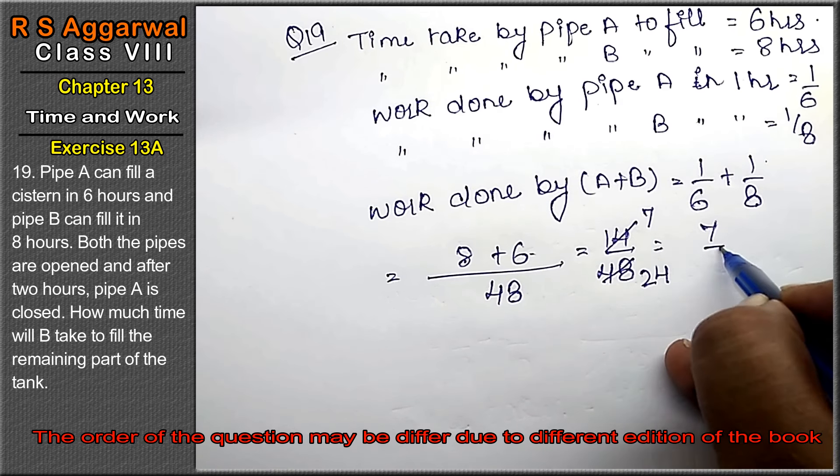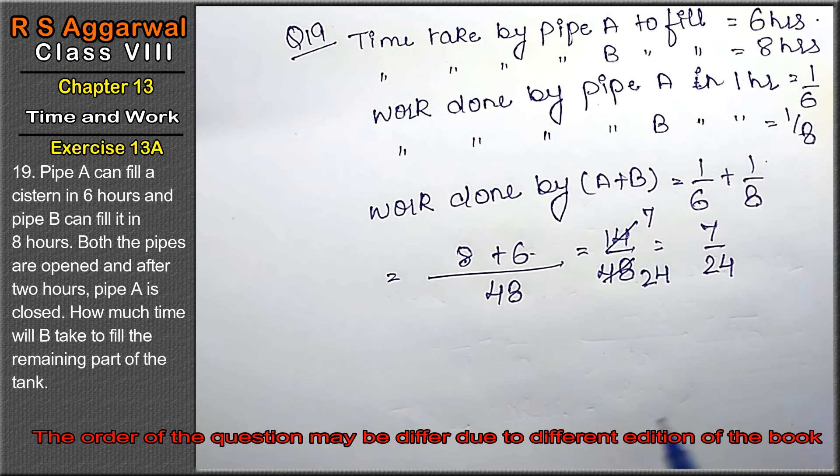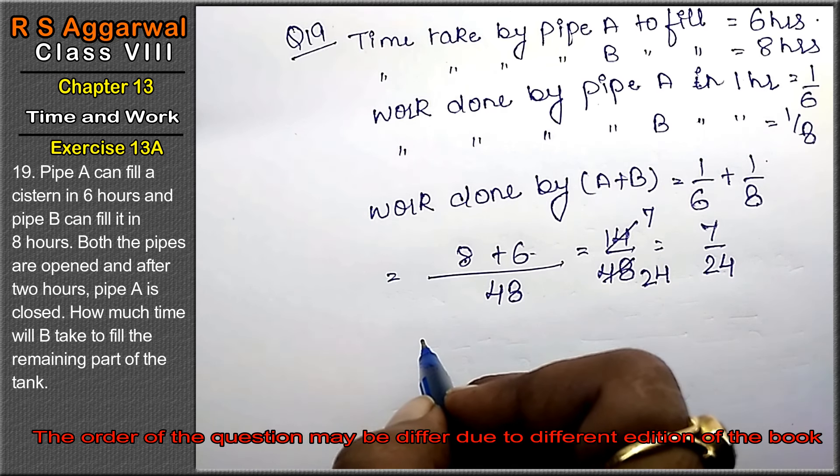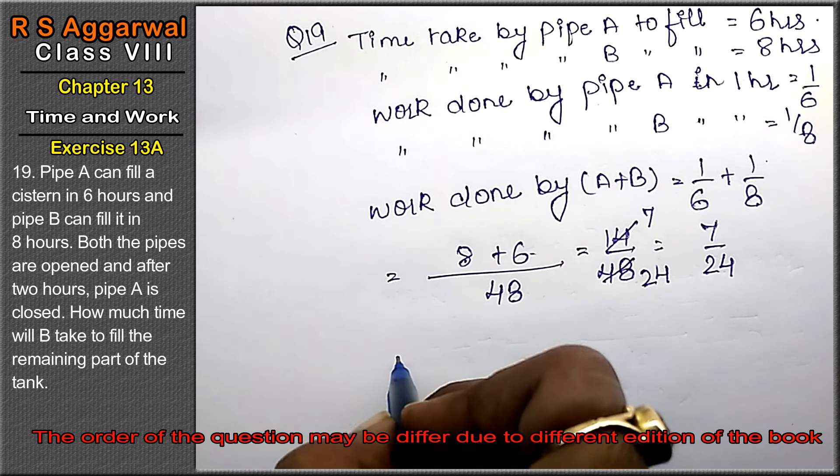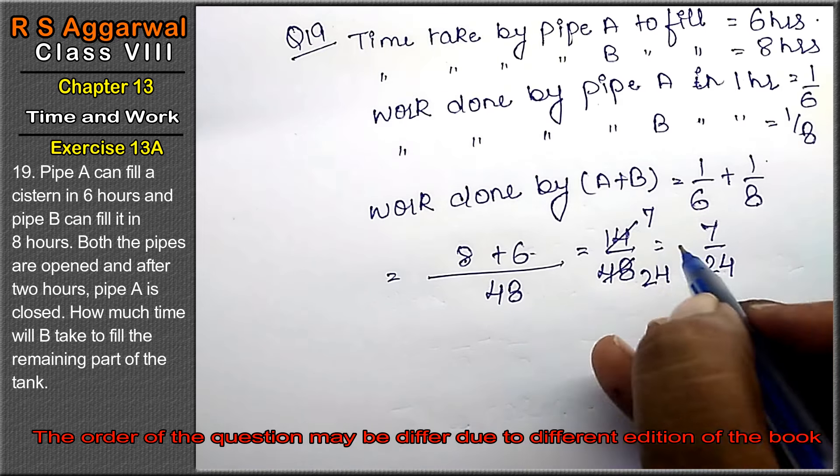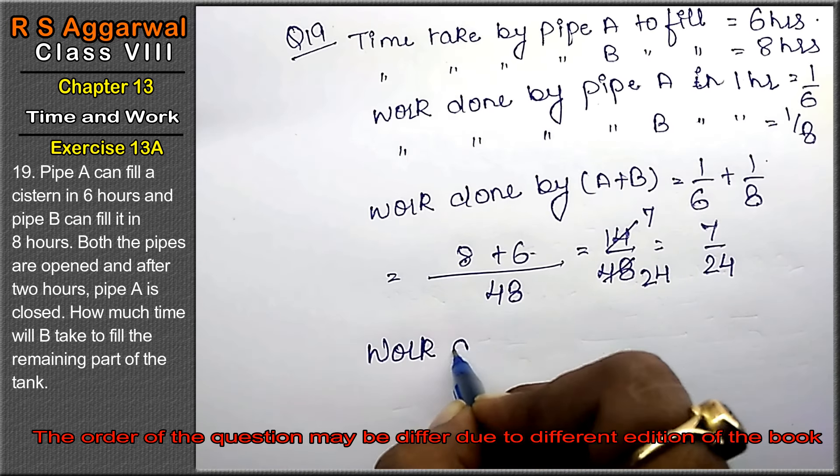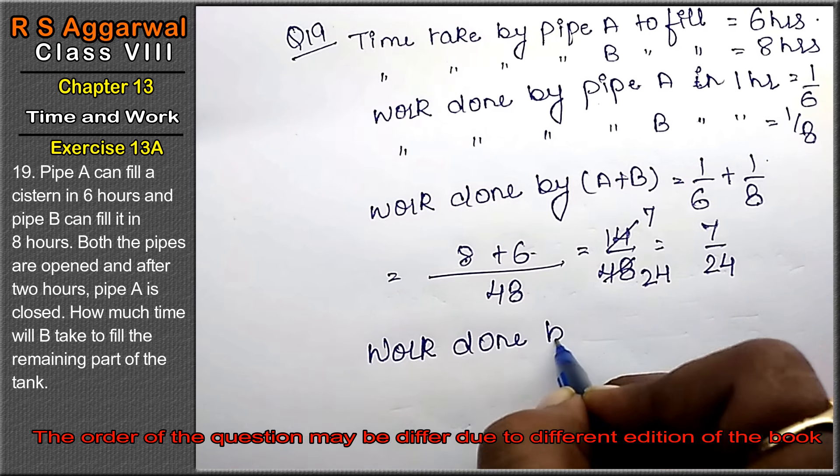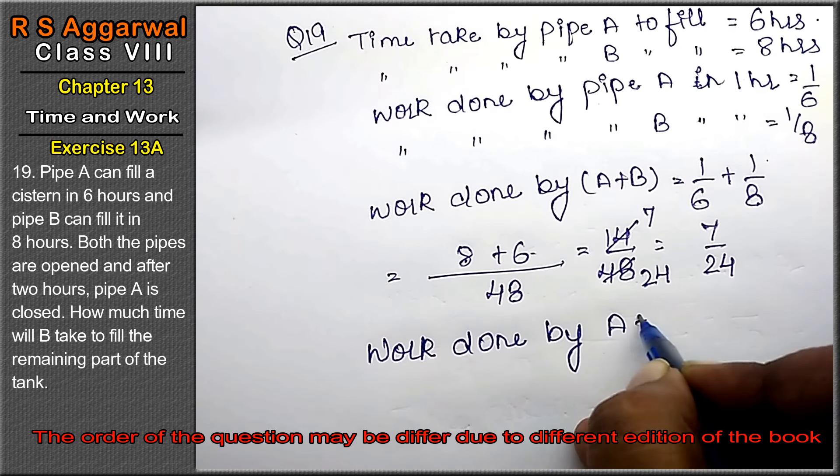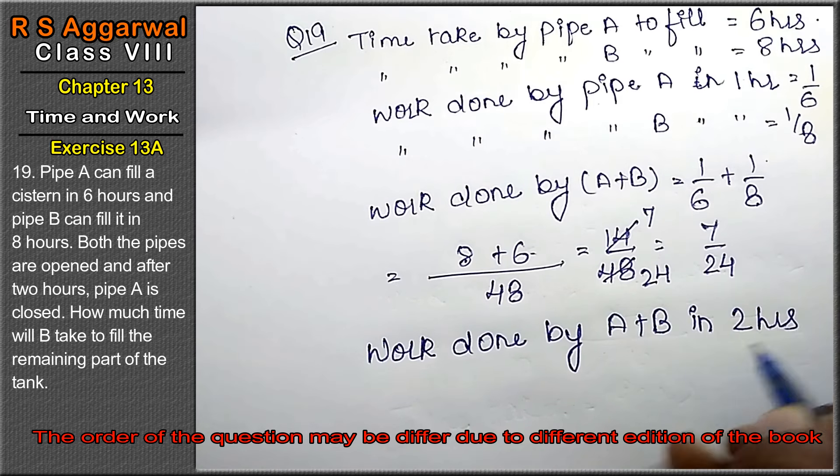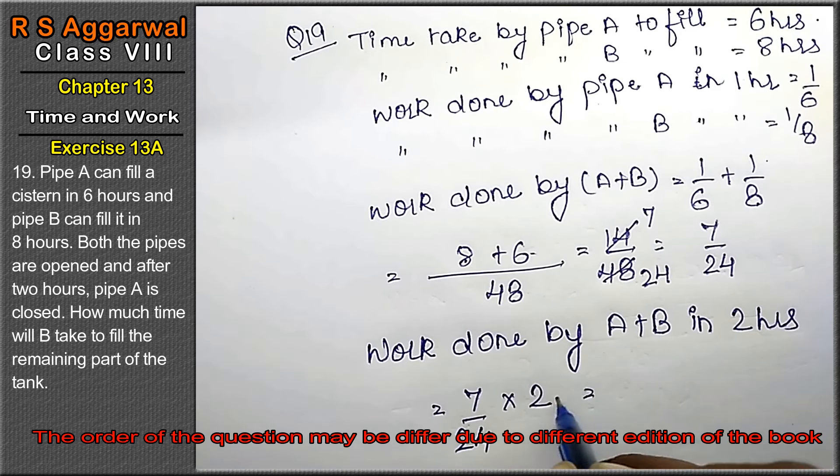Now, both pipes are opened and after 2 hours pipe A is closed. So in 2 hours, how much work is done? This is work in 1 hour. So work done by A plus B in 2 hours is 7 upon 24 times 2, that is 7 upon 12. So now we'll find the remaining work.